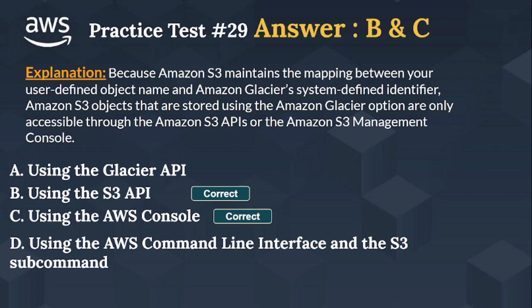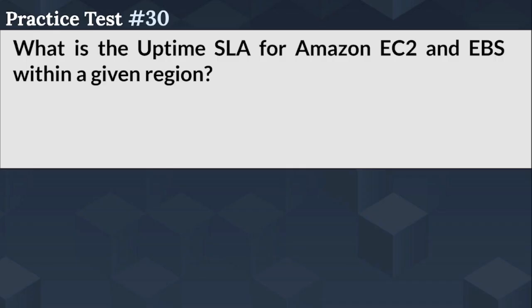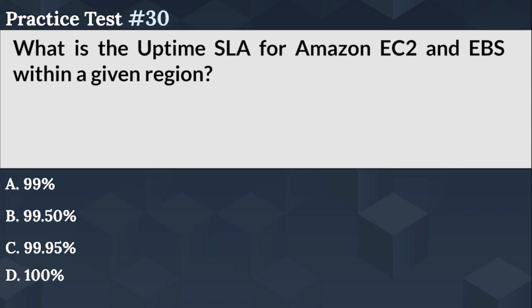What is the uptime SLA for Amazon EC2 and EBS within a given region? Option A: 99%. Option B: 99.50%. Option C: 99.95%. Option D: 100%.